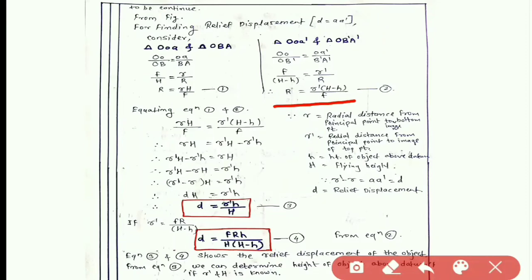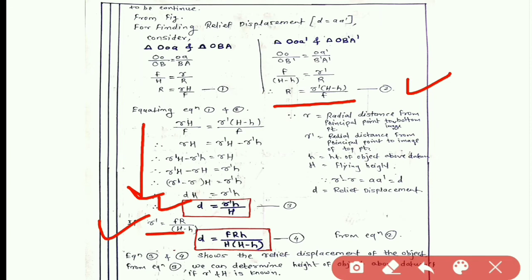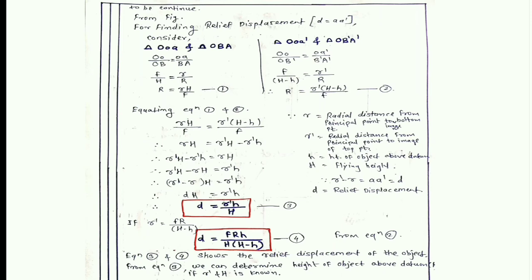From the second triangle, Equation 2 is: capital R equals r-dash times (H minus h) divided by f. Since both equations give the value of capital R, we can equate Equation 1 and Equation 2. You can pause the video to follow the derivation. The result is: d equals r-dash times h upon capital H. Here d is the relief displacement. Substituting the value of r-dash from Equation 2 into this expression gives Equation 4: d equals f times r times h upon capital H times (capital H minus h). Equations 3 and 4 express the relief displacement. From Equation 3, the height of the object above the datum can be determined if r-dash and H are known.